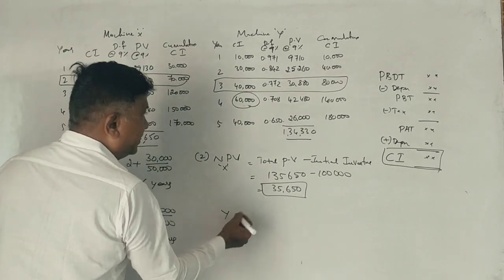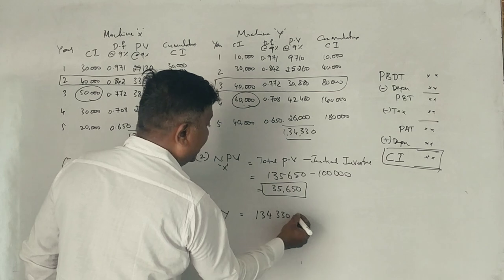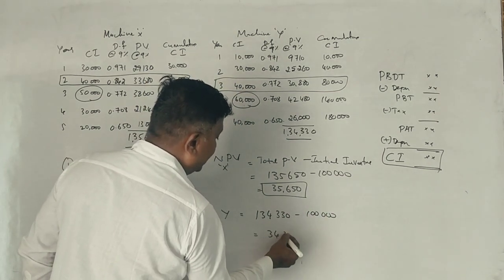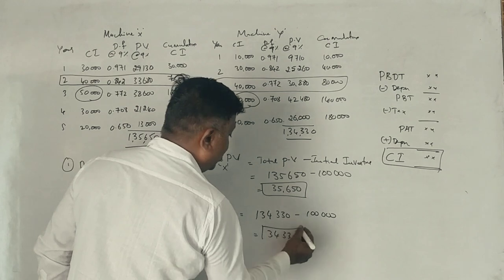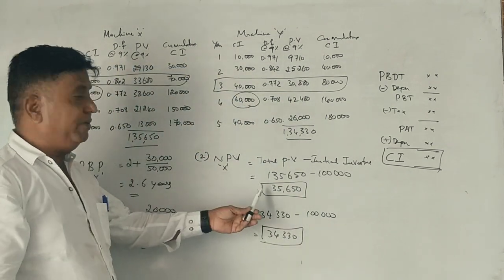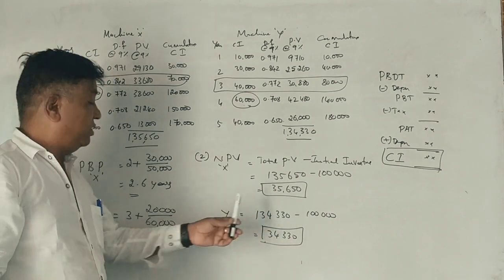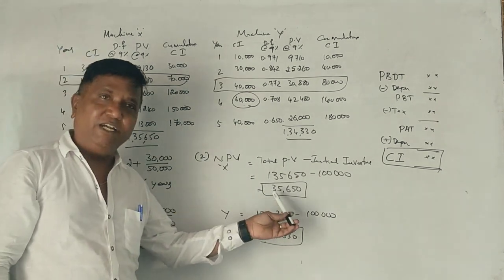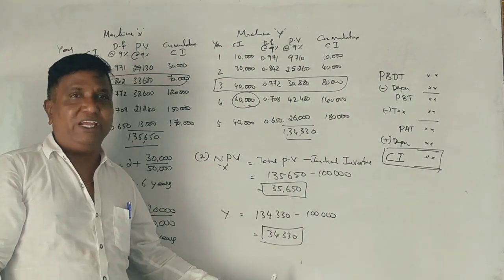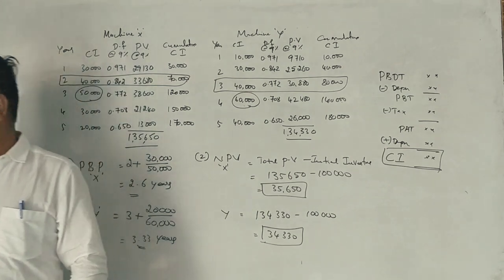Machine Y: total present value is 1,34,330 minus 1,00,000, we get 34,330. So the net present value for Machine X is higher. Machine X is favorable for both payback period and net present value compared to Machine Y. 14 marks is easy to get.